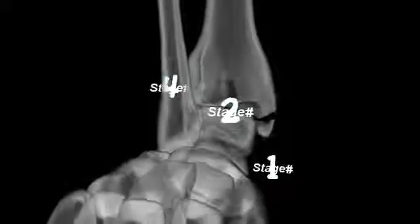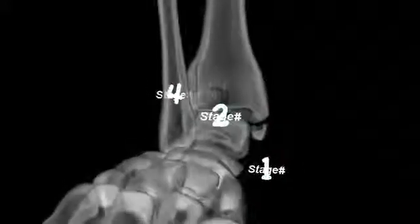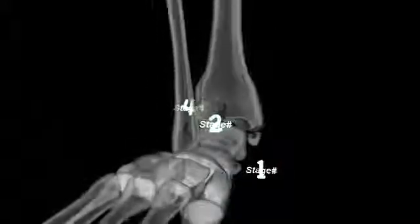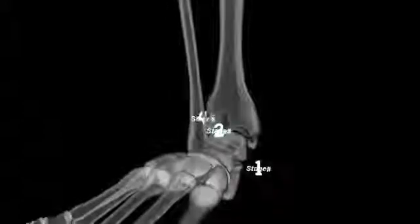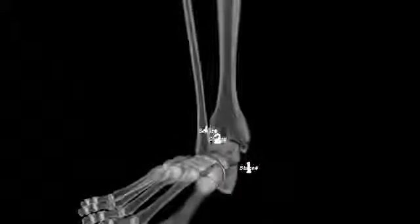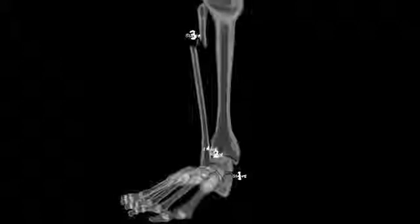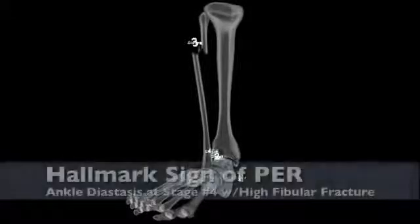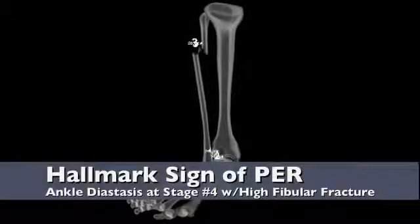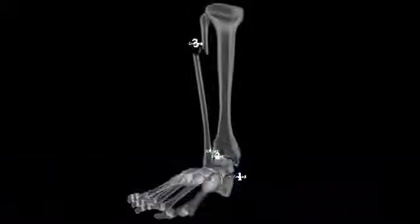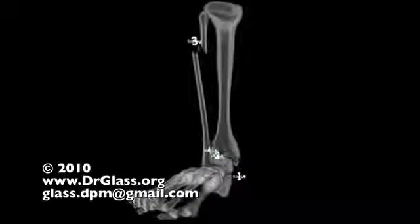In summary, the hallmark signs of this injury include forces beginning along the medial axis of the tibia, rupture of the interosseous membrane in conjunction with rupture of the anterior inferior tibial fibular ligament and the posterior inferior tibial fibular ligament, creating true ankle diastasis. The high fibular spiral fracture, also known as Maisonneuve fracture, seen in stage 3 is unique to pronation external rotation injuries.